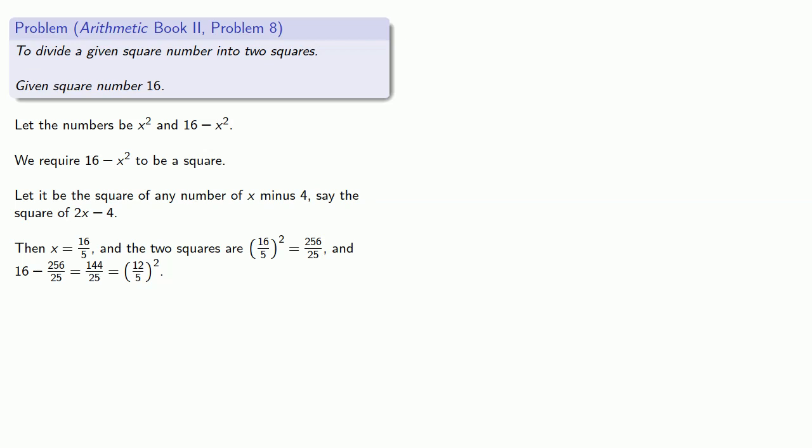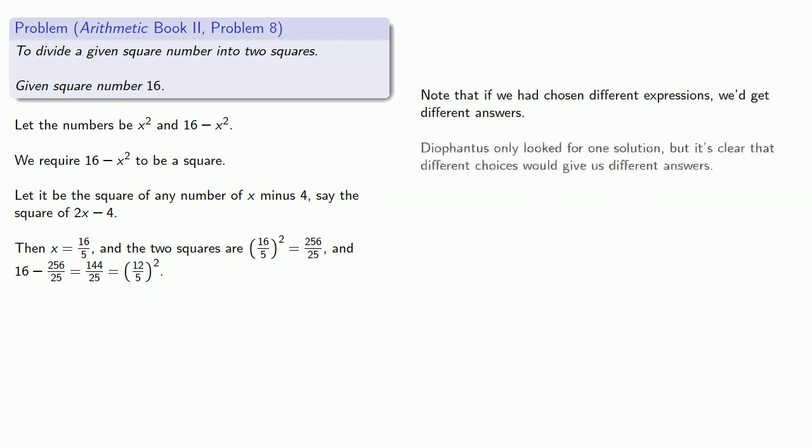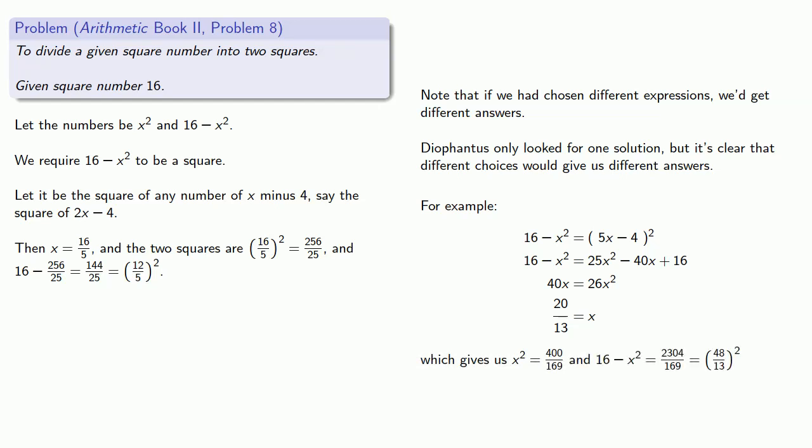It's worth pointing out that if we had chosen different expressions, we'd get different answers. Diophantus only looked for one solution, but it's clear that different choices would give us different answers. For example, if we had chosen that 16 minus x squared was the square of, say, 5x minus 4, we'd get x squared is 400/169 and 16 minus x squared is the square of 40/13.